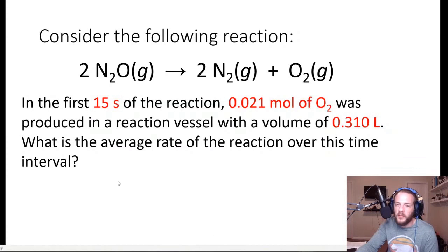So this problem says to consider the following reaction, where we have 2 moles of N2O gas reacting to form 2 moles of N2 and 1 mole of O2. And it says in the first 15 seconds of this reaction, 0.021 moles of O2 was produced in a reaction vessel with a volume of 0.310 liters. And it asks us, what is the average rate of the reaction over this time interval?